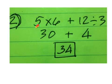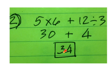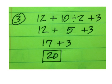Problem number 2. 5 times 6 is 30, and then 12 divided by 3 is 4. Don't do 6 plus 12 — you'll end up with 34. For this one, you must go to 10 divided by 2 first to get 5, and then add left to right to get 20.